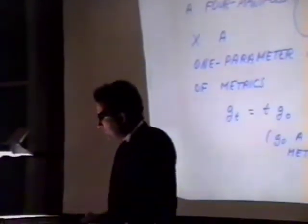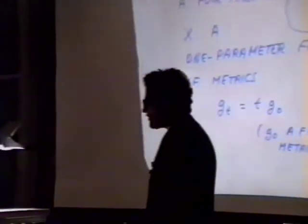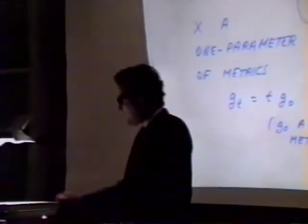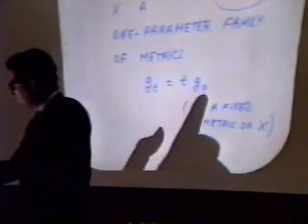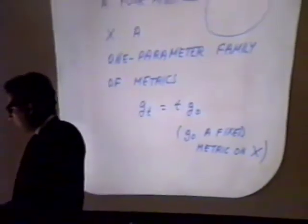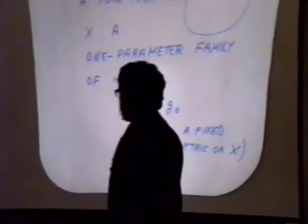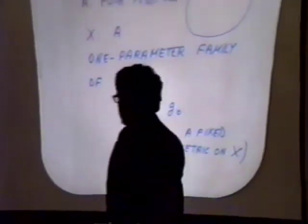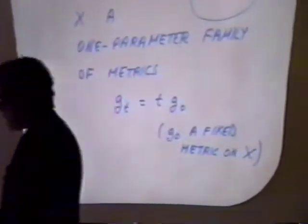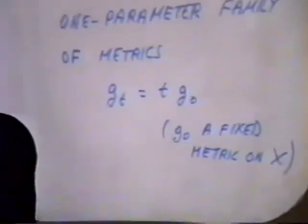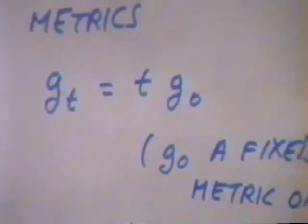But here we'll consider not a single metric on X. Rather, we'll fix a metric g₀, and we'll consider a one-parameter family of metrics g_t, which is t times g₀, where t is a real parameter that goes from 0 to infinity.